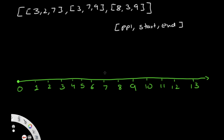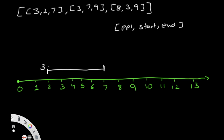We have a number line to represent the directions. Using the same example — trips [3,2,7], [3,7,9], and [8,3,9] — the first value is the number of people, the second is the start location, and the third is the end location. The first trip starts at kilometer 2 and goes to kilometer 7, transporting three people.